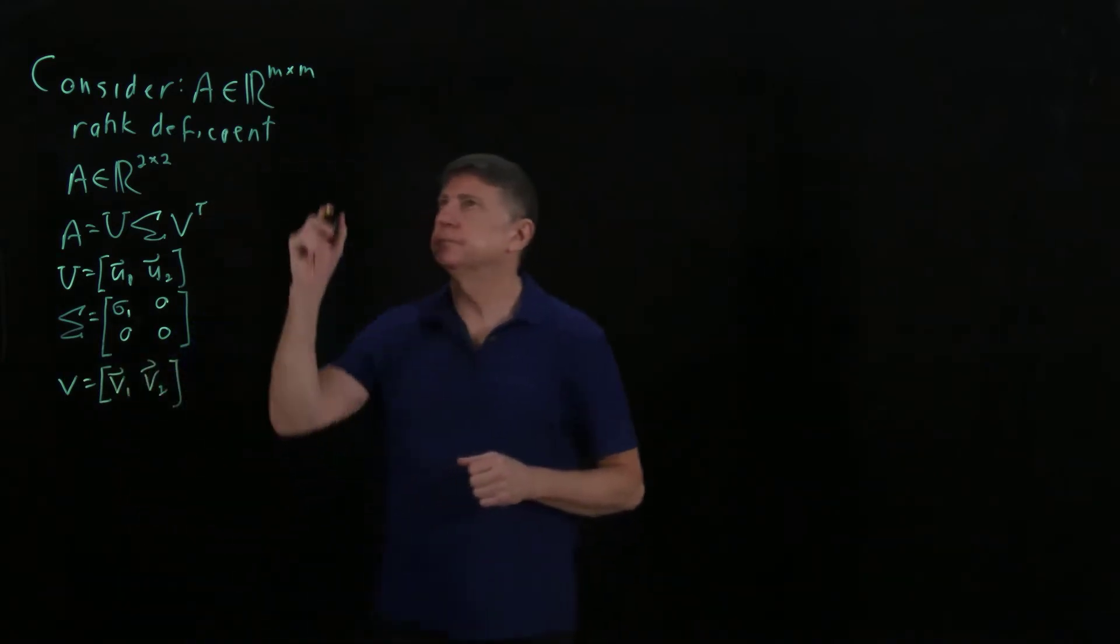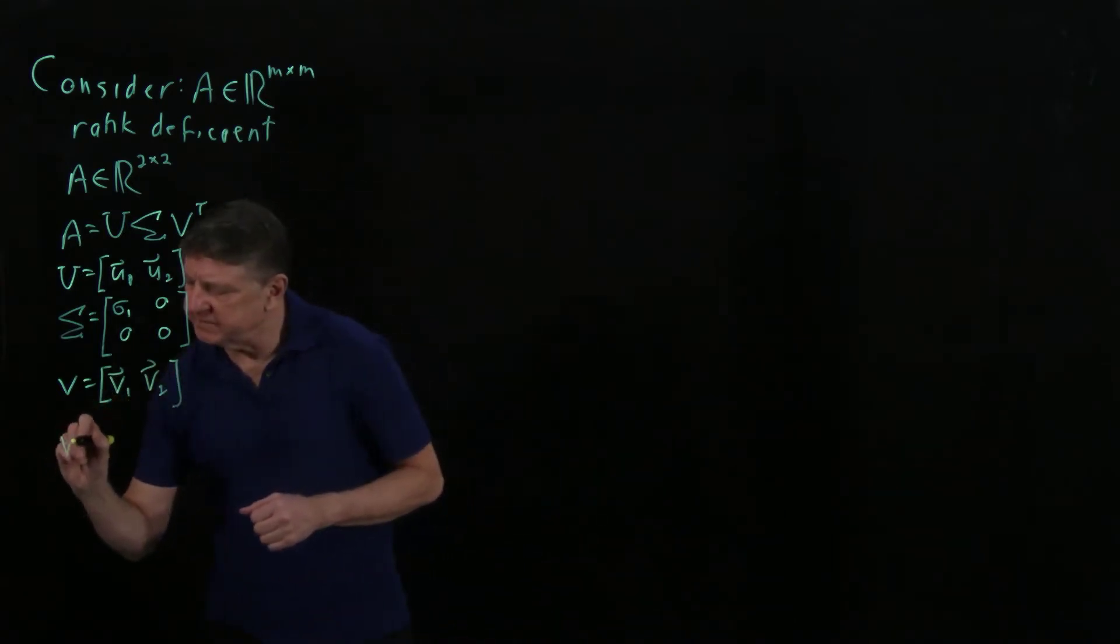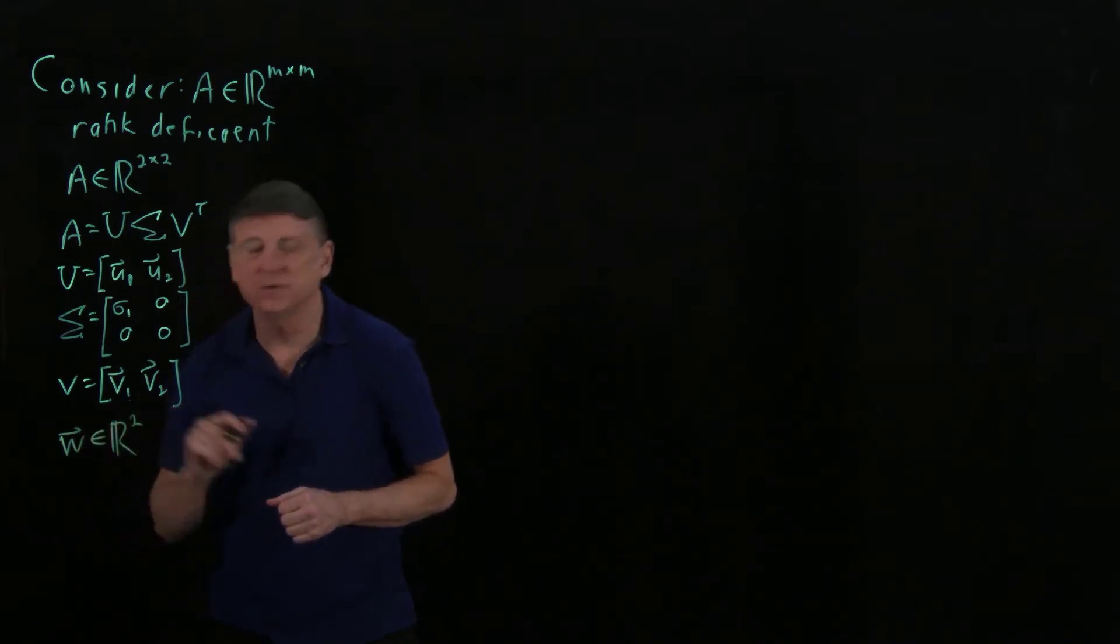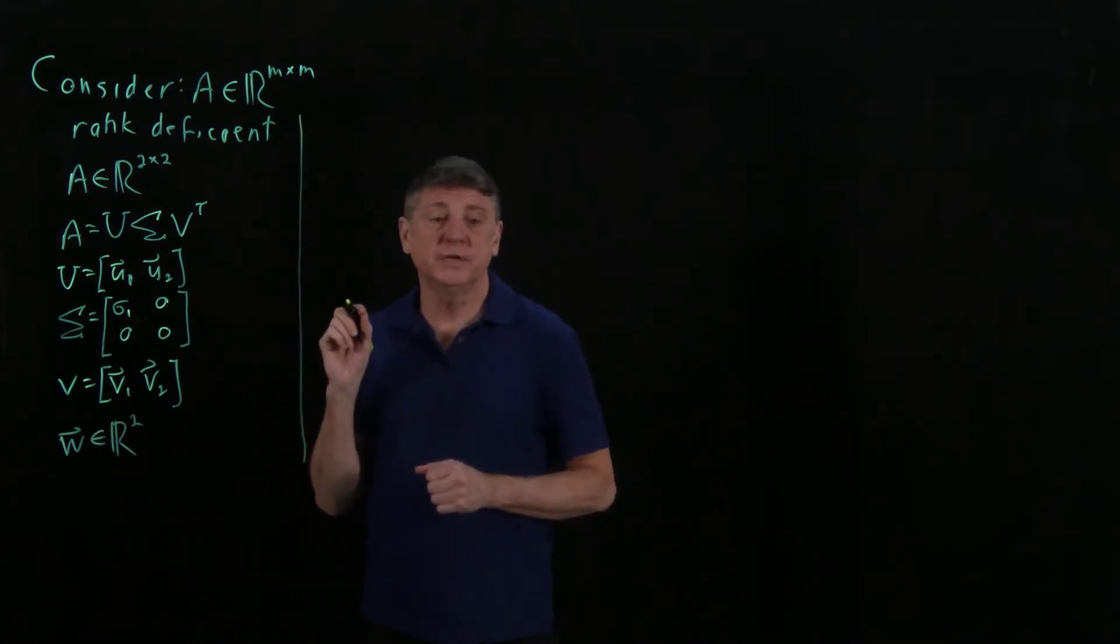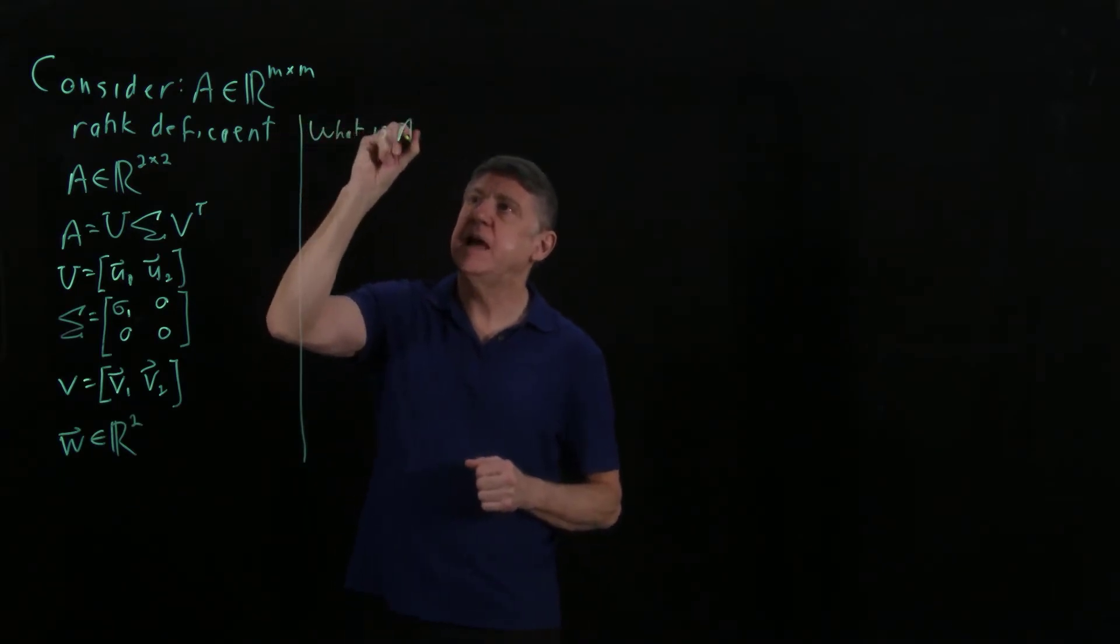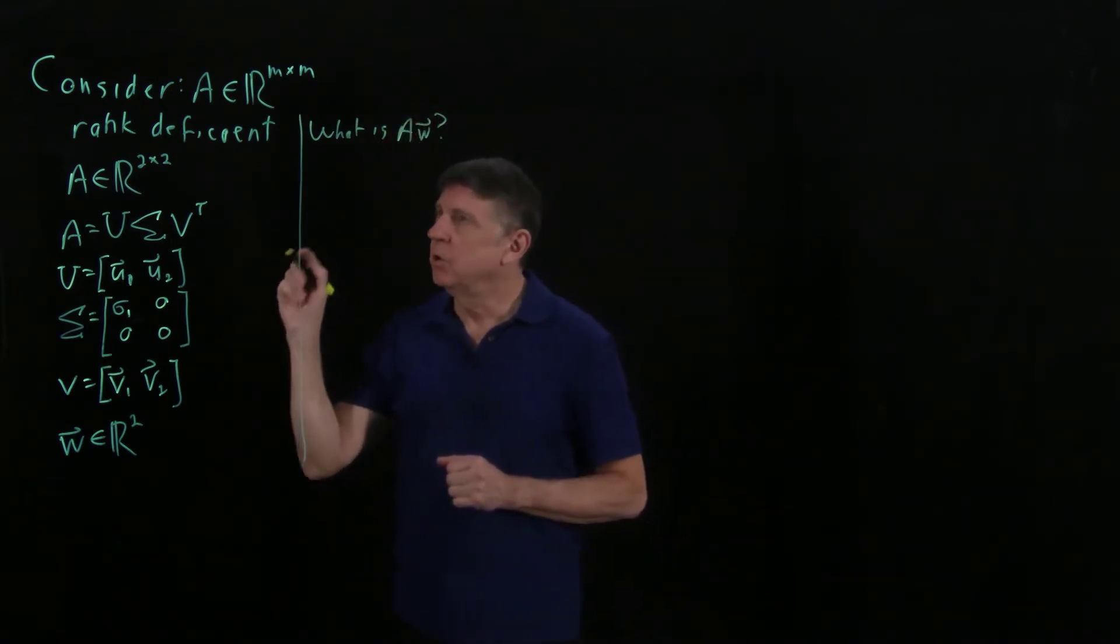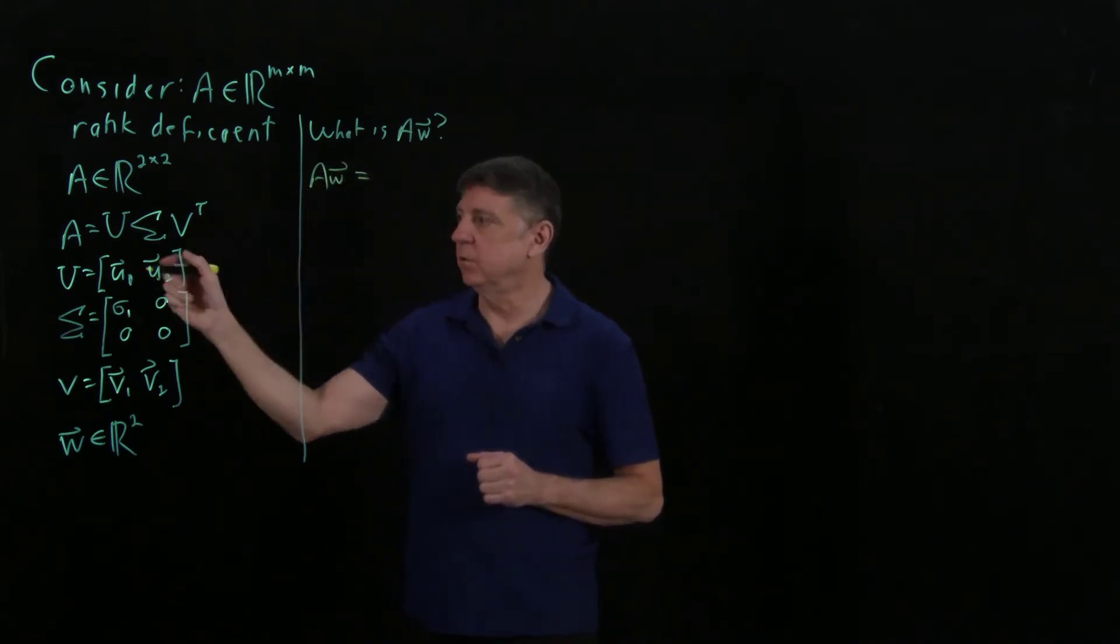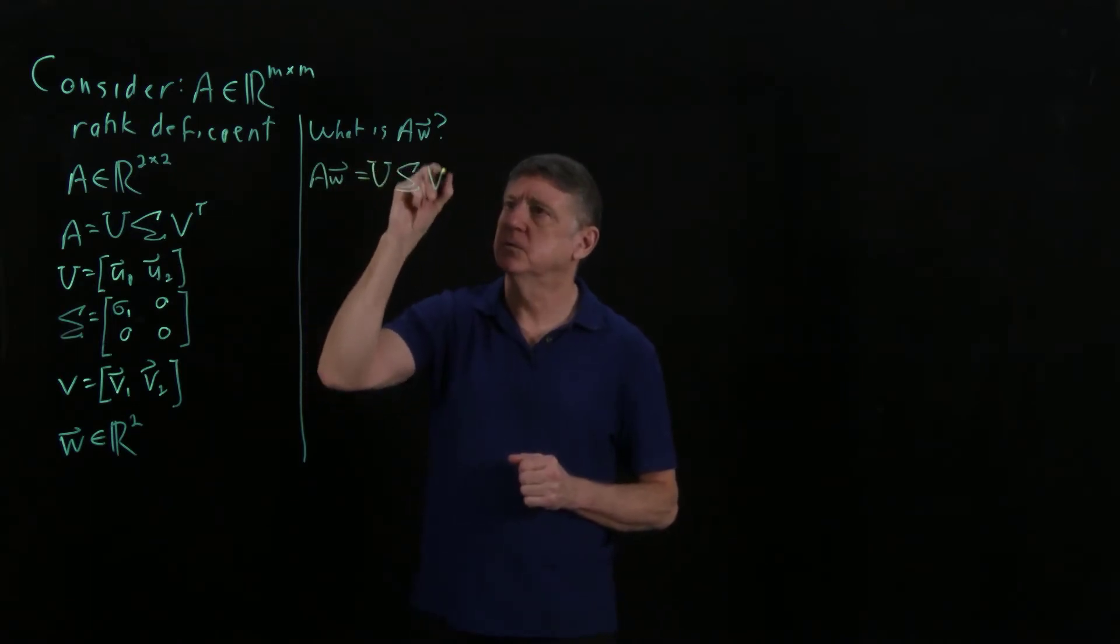Now, let us ask ourselves, let's say that we have some vector W, and that this is all real numbers, and it is size 2. So now, what we can do is we can ask, what is A times W? And the answer is, A times W has to equal, for A we can substitute its singular value decomposition.